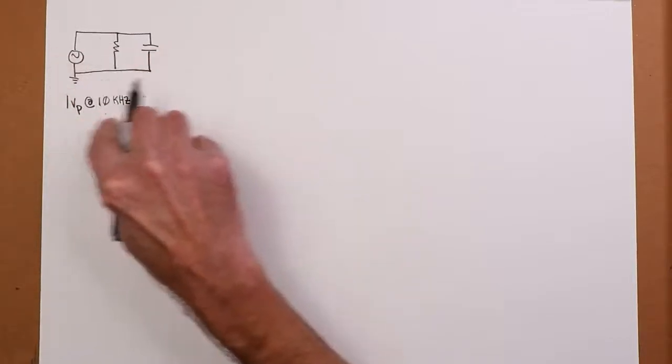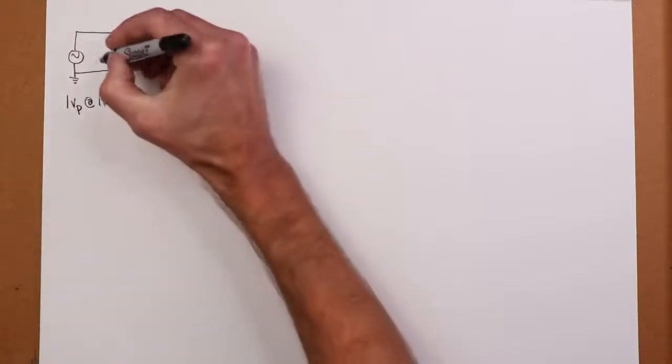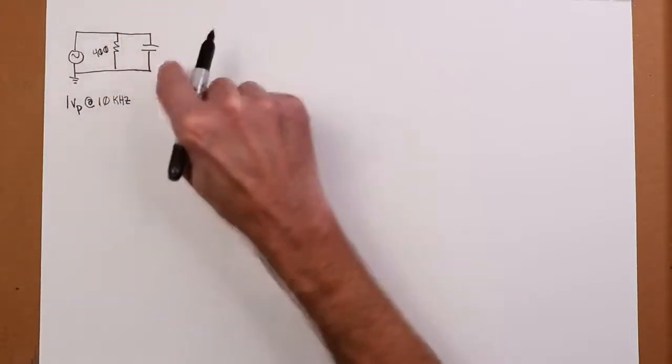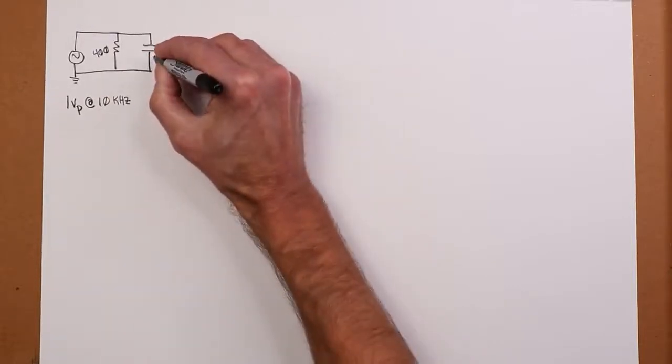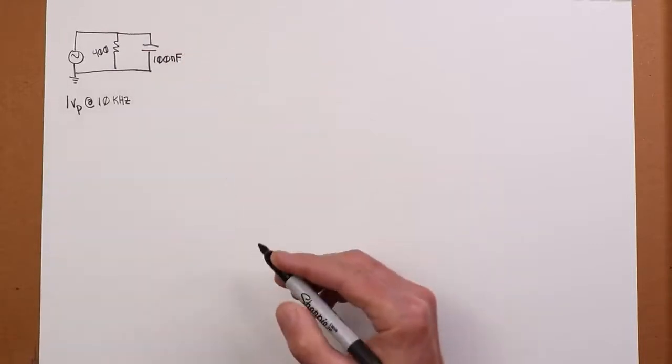And we'll use this as our reference angle. The voltage, we'll assume, is angle zero. 400 ohms for the resistor. And for the capacitor, we'll say that's 100 nanofarads.